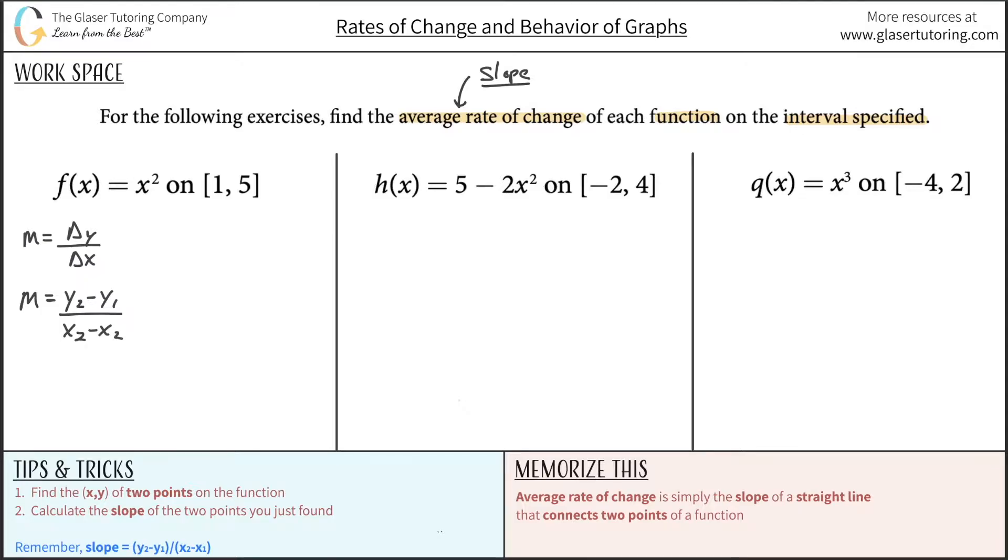Now what this represents - the twos and the ones are just subscripts. X2 and Y2 represents one coordinate or one point on a graph or of a function, X comma Y. And these values, X1 and Y1, represent another point on the same graph or function.